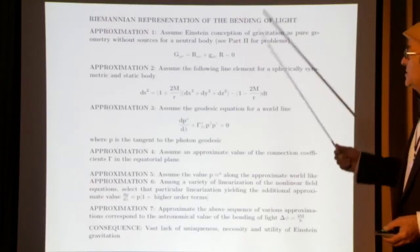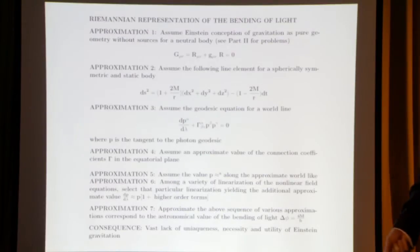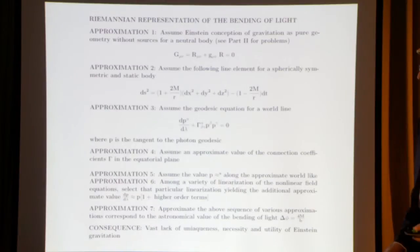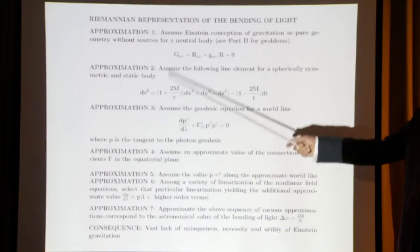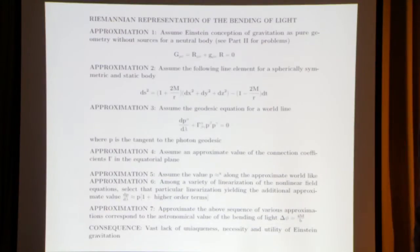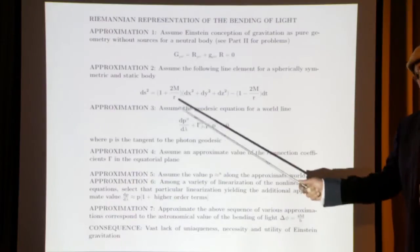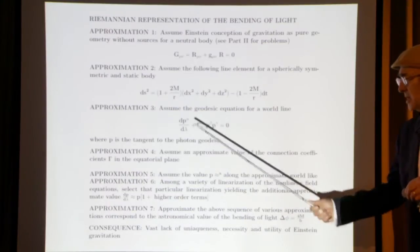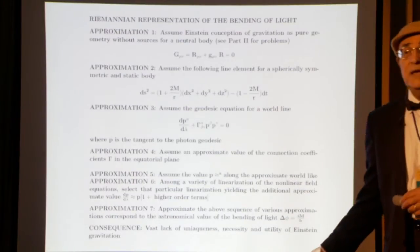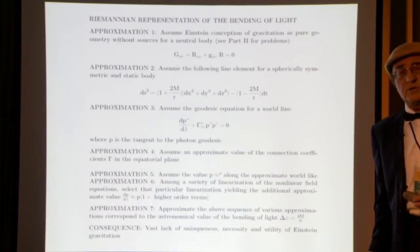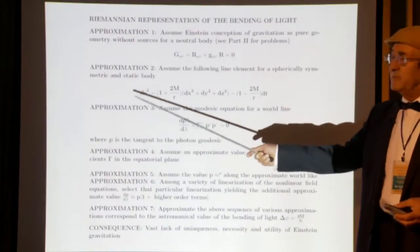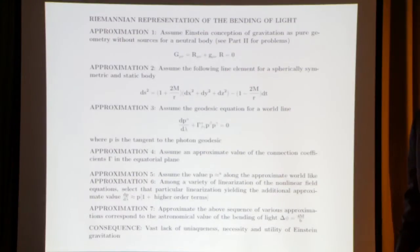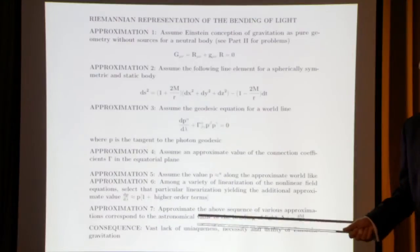Let's see what happens with Einstein's representation of the curvature of space. It is based on a chain of assumptions — there are seven independent assumptions to achieve it. After those seven assumptions, you do indeed achieve a representation of the bending of light with curvature. But the problem is that each and every one of those assumptions is debatable, as you will see in the rest of this lecture.